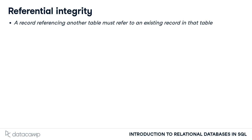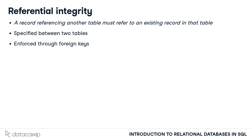In other words, a record in table A cannot point to a record in table B that doesn't exist. Referential integrity is a constraint that always concerns two tables, and is enforced through foreign keys, as you've seen in the previous lessons of this chapter. So if you define a foreign key in a table professors referencing the table universities, referential integrity is held from professors to universities.